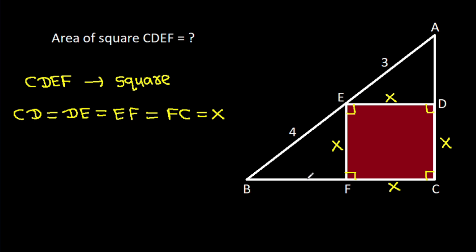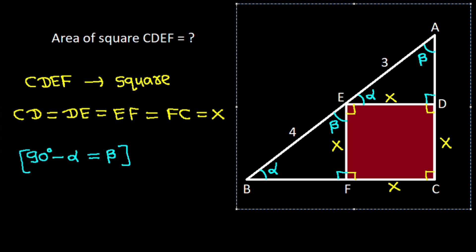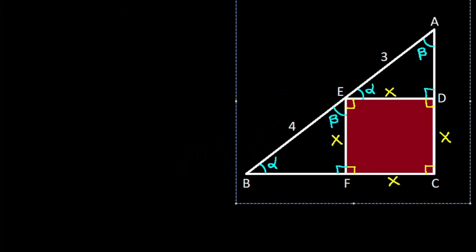Now, suppose this angle is alpha, then the adjacent angle is 90 degrees, so this angle will be 90 degrees minus alpha. Suppose it is beta — this angle is beta and this angle is 90 degrees — so this angle will again be alpha, and this angle is 90 degrees, so this angle will be beta.